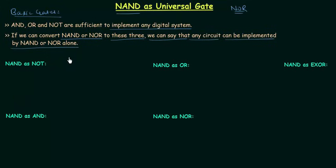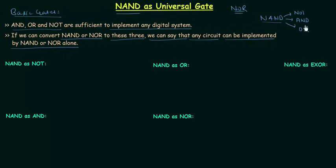This is very simple. We can implement any digital system using basic gates AND, OR, and NOT. And if I can convert NAND to NOT, NAND to AND, and NAND to OR — if I can convert NAND to these three — I can say that NAND is a universal gate. Because by using these three we can implement any digital system, and as we can obtain NOT, AND, and OR using NAND only, we can implement any digital system using NAND only. The same thing is applicable for NOR. In this lecture we will deal with NAND gate; in the next lecture we will deal with NOR.